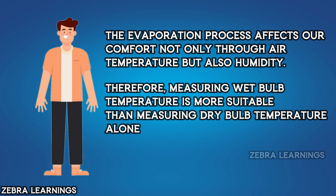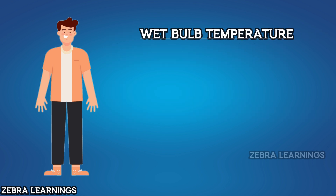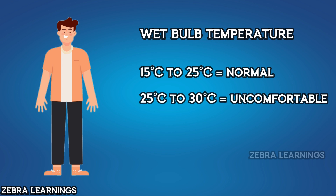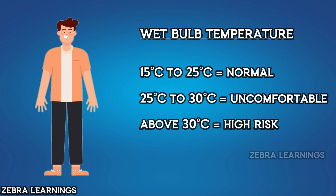Therefore, measuring wet bulb temperature would be more suitable for determining human thermal comfort than measuring air temperature alone. A wet bulb temperature between 15°C and 25°C is considered normal for the human body. Between 25°C and 30°C, we start to feel uncomfortable. When the wet bulb temperature exceeds 30°C, there is a high risk of heat stress and heat stroke, so it's best to stay indoors.